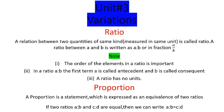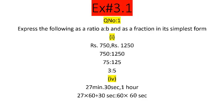Exercise 3.1 short questions کے لیے ہے۔ Question number 1 کے part 1 میں 750 روپے اور 1250 روپے کا ratio simple form میں convert کرنا ہے۔ 750:1250 کو simplify کریں: zero سے zero cancel، 75:125 آئے گا، پھر 25 کے table سے cut کریں تو 3:5 آجائے گا۔